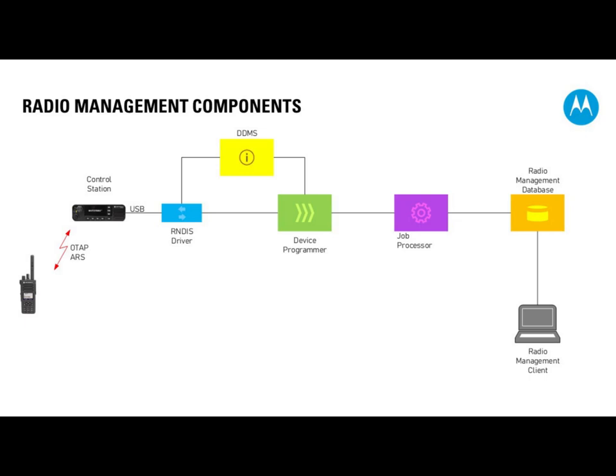Without ARS and DDMS, the device programmer would send query packets and poll the radio, occupying airtime. If you're sending a lot of jobs, this impacts the capacity of your radio network. So it's always a good idea to use DDMS, and DDMS only works if you enable ARS in the radios. You need to enable ARS in the radios and install DDMS. There are some exceptions, but we'll come to those.